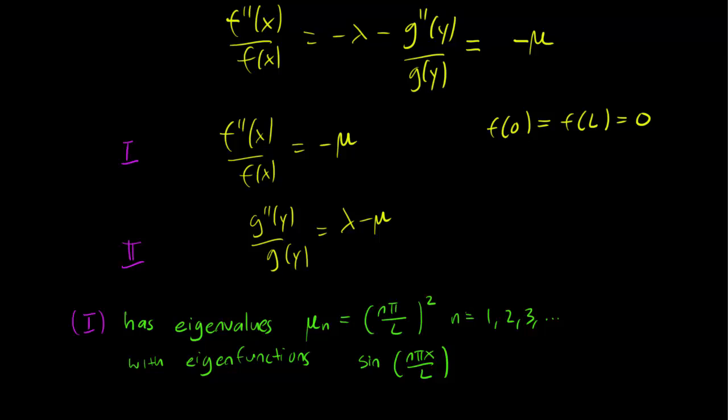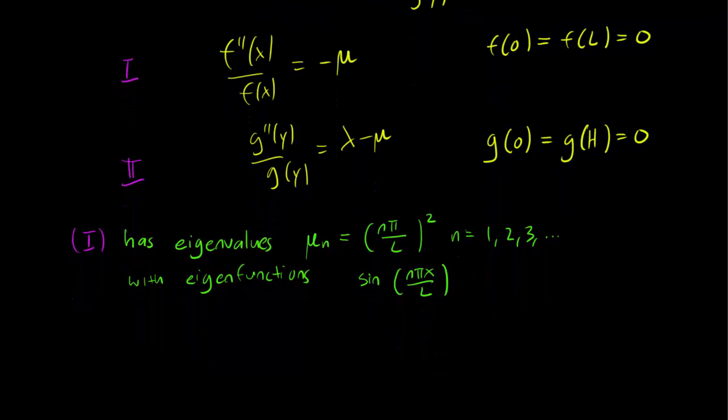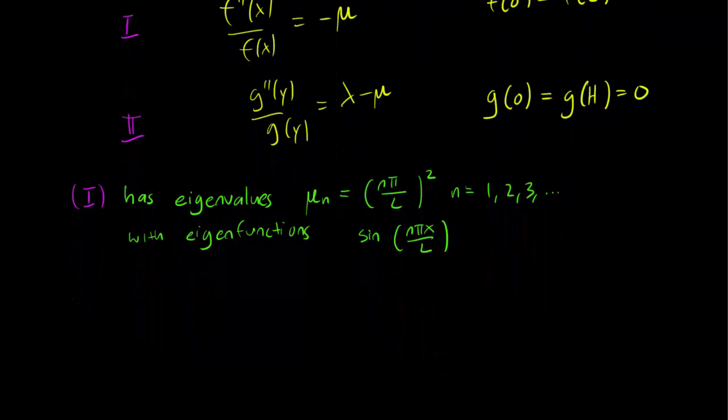Now, let's consider the second problem, which is a bit more interesting. So again, we have these boundary conditions, g(0) equals g(H) equals 0. Now, here's the thing. We can consider a fixed n. So let's do that.